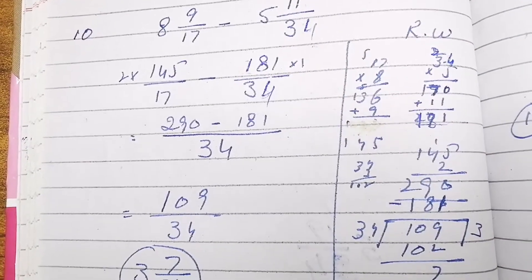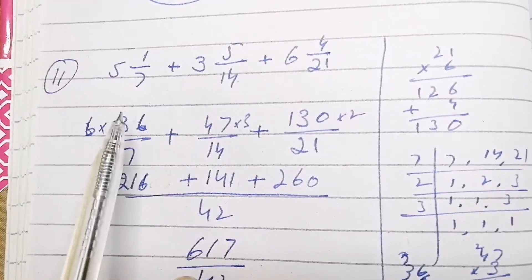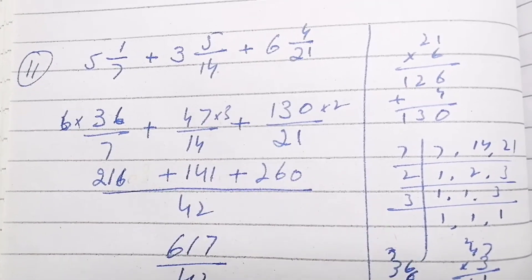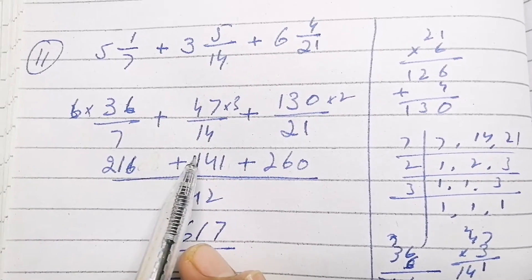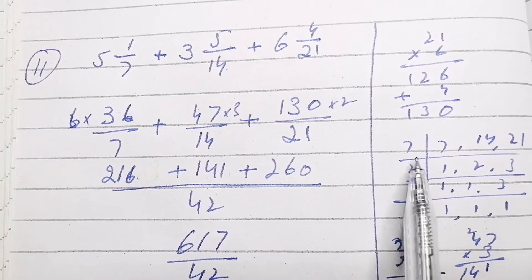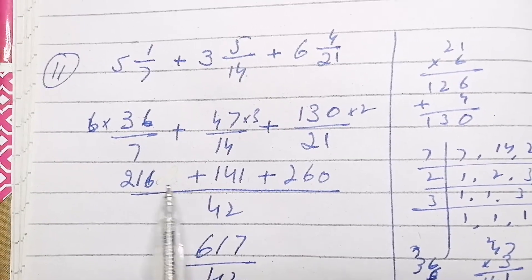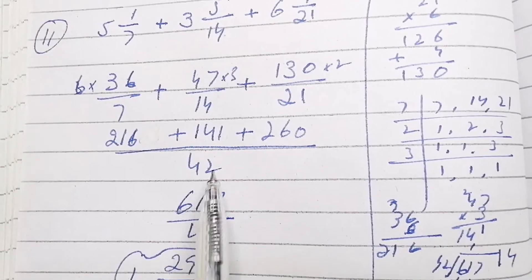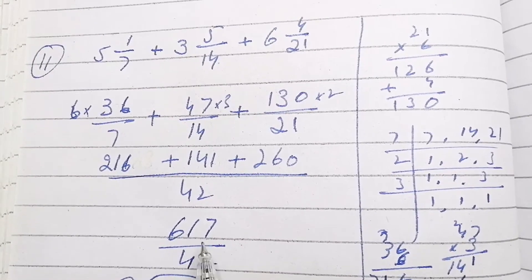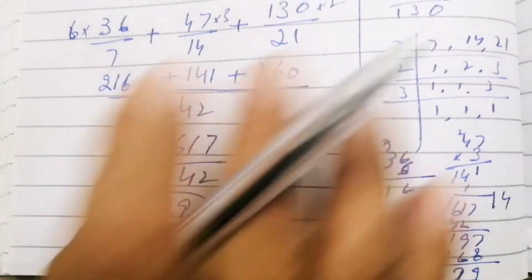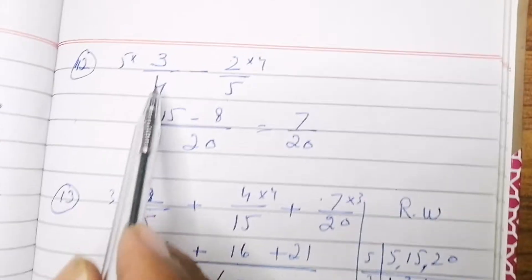Question 11, Exercise 10: 5 whole 1 over 7 plus 3 whole 1 over 14 plus 6 whole 4 over 24. Change these into improper fractions and then take the LCM. The denominators are 7, 14, and 42, so the LCM is 42. Calculate the fractions, and you get 617 over 42. Divide it and you get the answer as a mixed fraction.